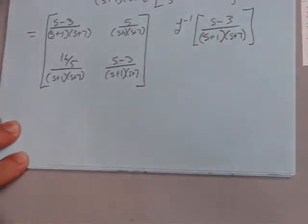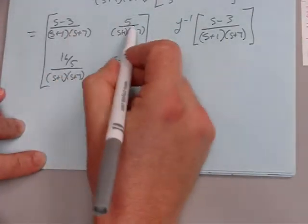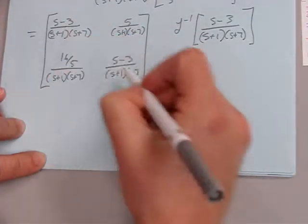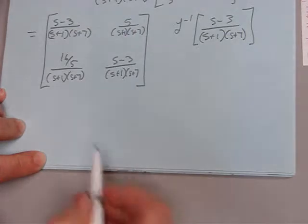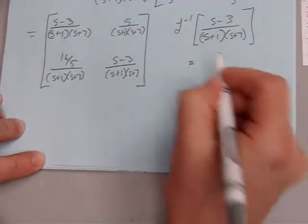Since we have distinct roots, we're basically going to have to do partial fraction expansion for each one. These two are the same, so partial fraction expansions, three of them, to find what these end up being.